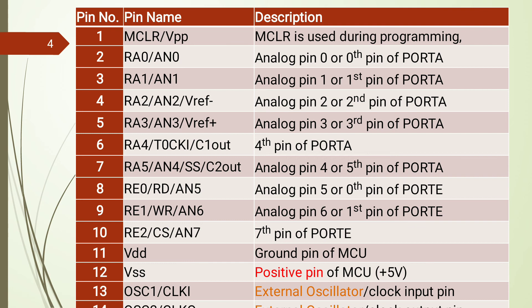Port E has only three pins — RE0, RE1, RE2 — but each carries three alternate functions: as I/O pins, as analog inputs AN5, AN6, AN7, and as control signals RD bar, WR bar, and CS bar. These control signals from Port E are important when Port D is used in PSP mode to provide read, write, and chip-select control.